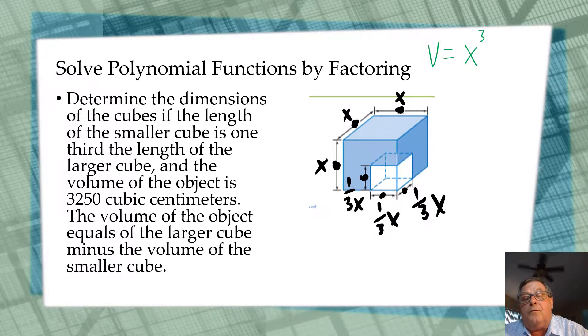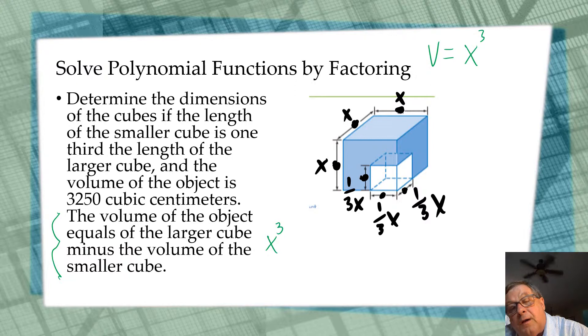Then the volume of the whole thing is actually going to be, since the volume of the object equals the larger cube minus the volume of the smaller cube, this would actually equal x cubed minus one-third x cubed equals 3,250.